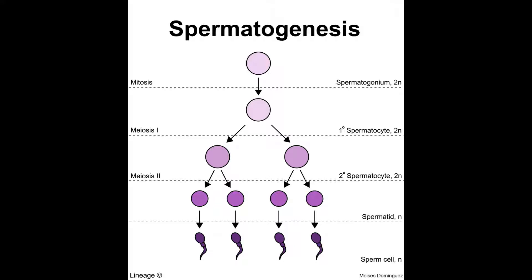For explaining spermatogenesis, there is a very good flowchart available which is very simple and you can easily understand it. First of all, you are going to see the primordial germ cells. These are the primordial germ cells which we have in the embryonic stage. After this, we will create a spermatogonium, which is a specific cell. The primordial germ cells are 2N.